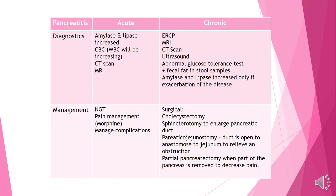For chronic pancreatitis, an ERCP is done to focus on any blockages — this is not utilized in acute pancreatitis as it is more diagnostic. MRI and CT scan can show blockages or inflammatory processes. Ultrasound can give an idea of size. Amylase and lipase will be elevated, and there will be an abnormal glucose tolerance test and fecal fat in stool samples. Amylase and lipase are only increased during an exacerbation; when chronic patients have flares, that's when they really start to rise.